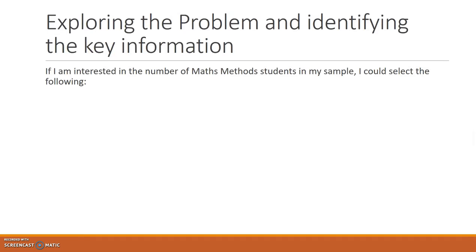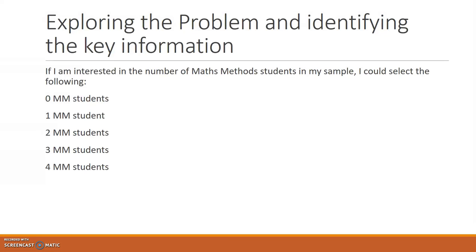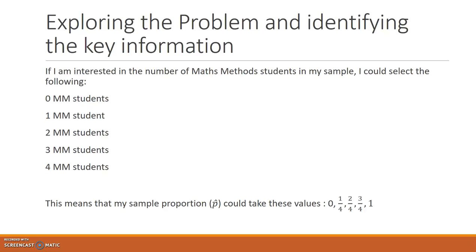If I'm interested in the number of Maths Methods students in my sample, I could select zero, one, two, three, or four Maths Methods students. This means that my sample proportion P-hat could take on the values: 0, 1/4, 1/2, 3/4, or 1.